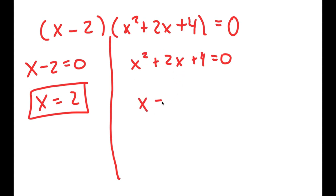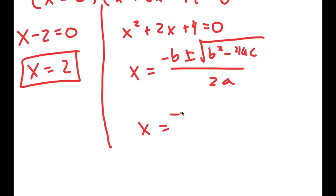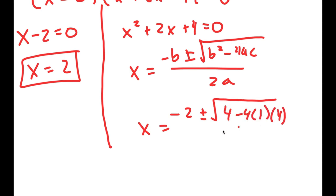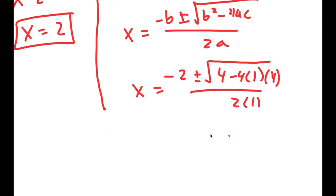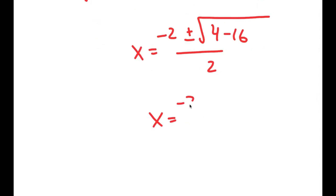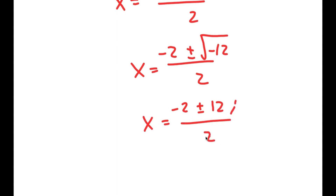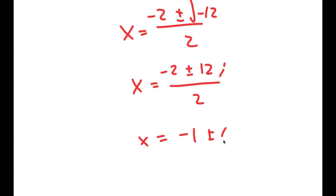To solve x squared plus 2x plus 4 equals 0, I'm going to use the quadratic formula. So I get negative 2 plus or minus the square root of 4 minus 4 times 1 times 4, all over 2 times 1. This turns into negative 2 plus or minus the square root of 4 minus 16 over 2, which equals negative 2 plus or minus the square root of negative 12 over 2, which equals negative 2 plus or minus 2i times the square root of 3 over 2, giving negative 1 plus or minus i times the square root of 3.